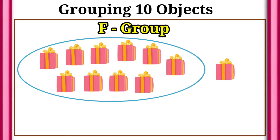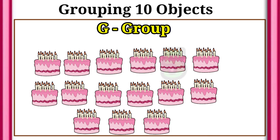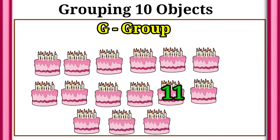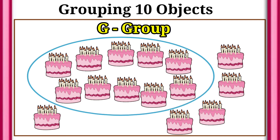Then there are G group of objects. 1, 2, 3, 4, 5, 6, 7, 8, 9, 10, 11, 12, 13, 14, 15. Here we have 15 objects. Let's circle 10 objects only.